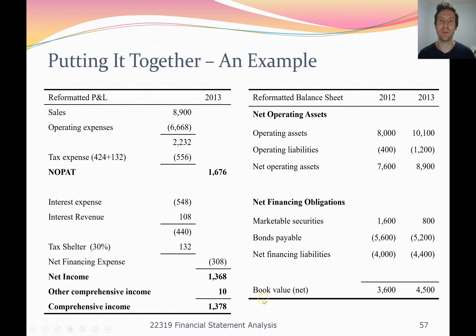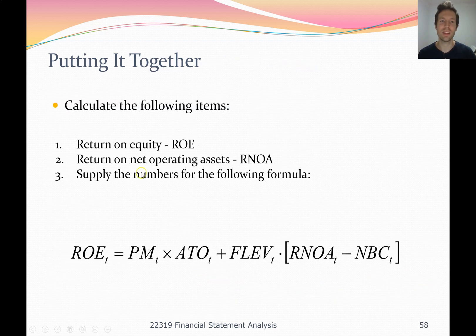Owner's equity could also be called book value. Average means the current year plus the previous year divided by two. So we take our net profit divided by our average owner's equity. Then we're asked to calculate return on net operating assets, and then for the third part, break down return on equity into the advanced DuPont formula.